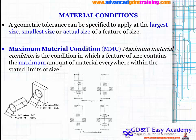To understand MMC, think of a weighing machine — wherever you get the maximum material, you get the maximum weight, and that is the MMC condition. For example, when a shaft diameter increases, the weight increases. When you decrease the shaft diameter, the weight decreases. Similarly, for a hole, when the diameter is reduced, you get the MMC condition. When the diameter is enlarged, you get the least material condition.